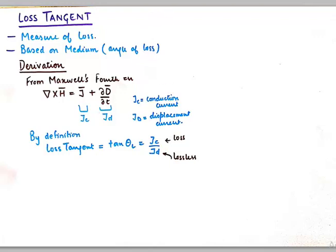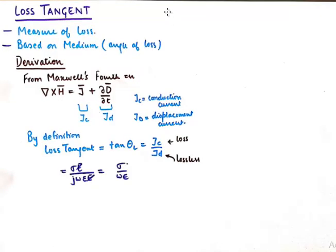We can express Jc in terms of sigma E and Jd as j omega epsilon E if we consider this as sinusoidal propagation. So E goes away so we are left with sigma upon omega epsilon and this is the loss tangent. You can clearly see that the loss tangent depends on the conductivity of the medium. So it is based entirely upon the medium.